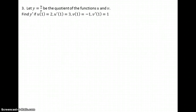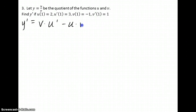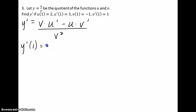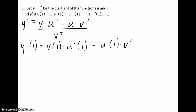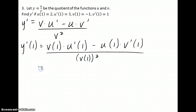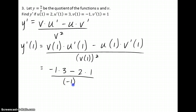Let y equal u divided by v be the quotient of the functions u and v. To find the derivative of the function, we need the quotient rule: y prime equals bottom times the derivative of the top, minus top times the derivative of the bottom, all over the bottom squared. To find the derivative of y at 1, we use the values of the functions given, all over v(1) squared. Plugging in: negative 1 times 3 minus 2 times 1, all over negative 1 squared — that's negative 3 minus 2, giving negative 5 as our final answer.